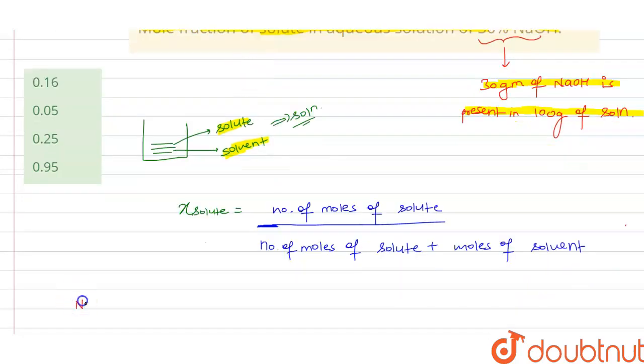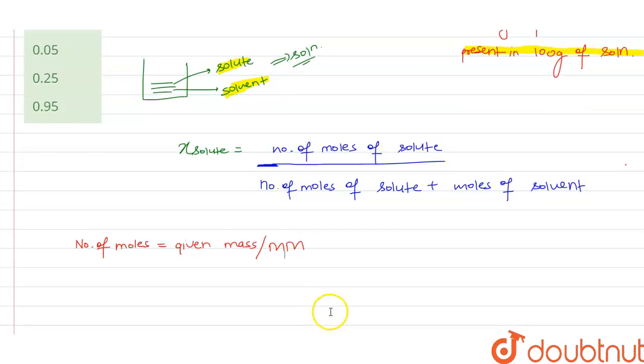Number of moles is defined as given mass upon molar mass. Now first we have to find the number of moles of solute, and here the solute dissolved in the solvent is NaOH.